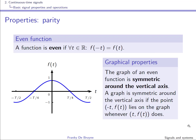A function is said to be even if it meets the following property for all times: the function at time t is equal to the function at time minus t. So if this is t and this is minus t over here, these values are the same. This is true for any t, which means that the graph of an even function is symmetric around the vertical axis.